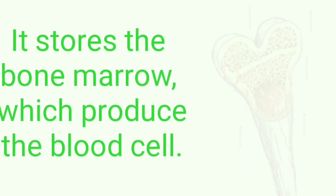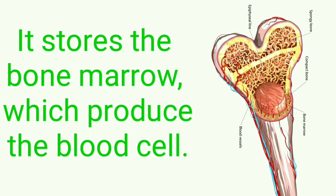It stores the bone marrow, which produces blood cells. This bone marrow is stored in the bones and is made up of blood cells. You know that there are 3 types of blood cells: RBC, WBC, and platelets.